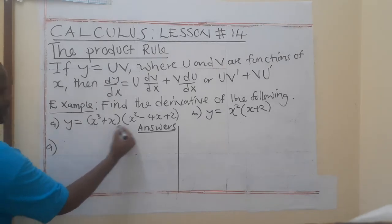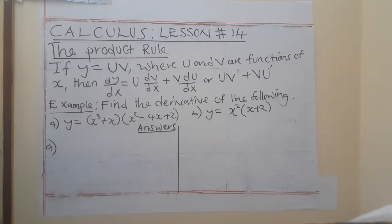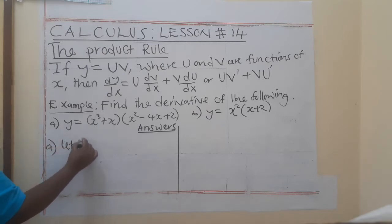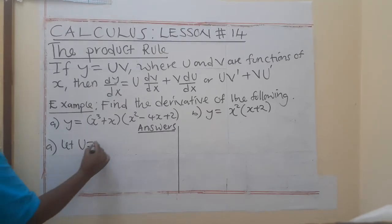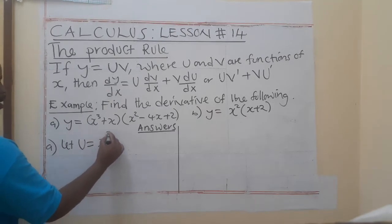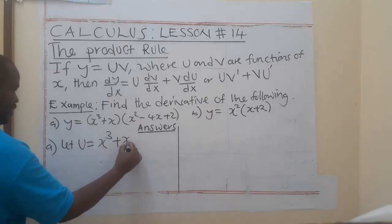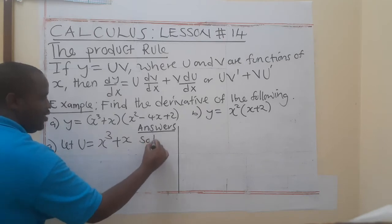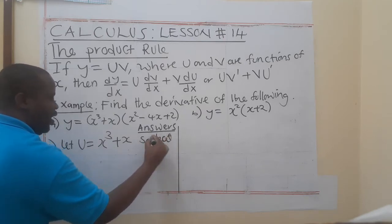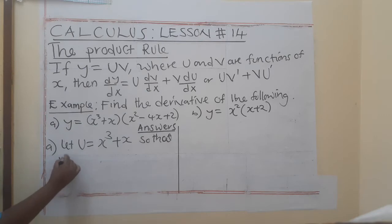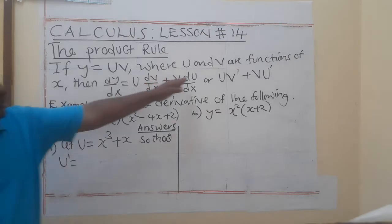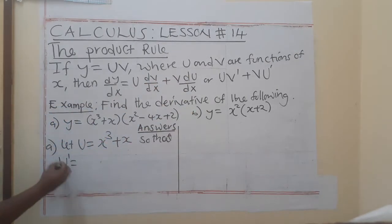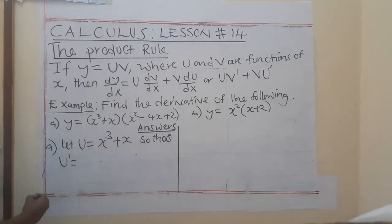When you have a function like y = this times that, you must decide which one should be your u and which should be your v. So we say, let u be equal to x³ + x. So, u-prime — meaning du/dx — when I differentiate this, I will say...